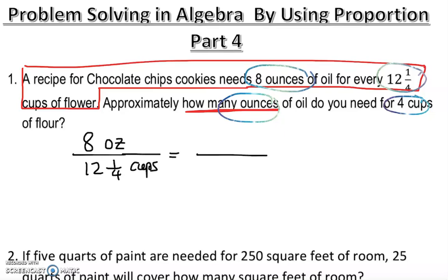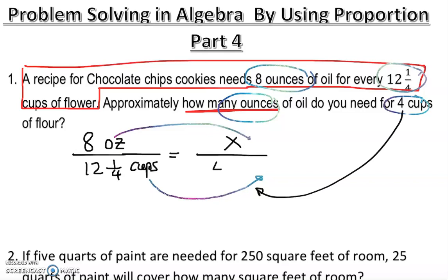You have to be careful when you convert your first sentence. You could have written twelve and one-quarter cups over eight ounces — that's fine, absolutely fine. But the next fraction is very important. You have to make sure the same unit is on the top. If you have ounces on the top here, you must have ounces on the top of the second fraction. If you have cups on the bottom, you must have cups on the bottom — they must match, otherwise you won't get the correct answer. We don't know how many ounces, so that is our x, and we know there are four cups.